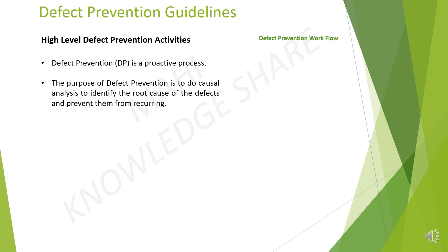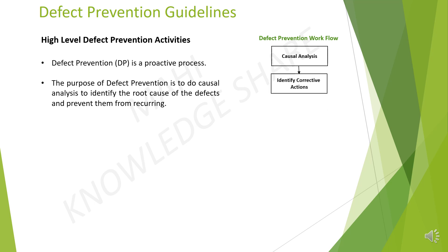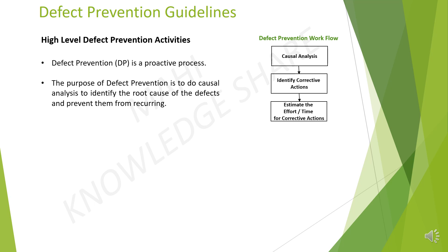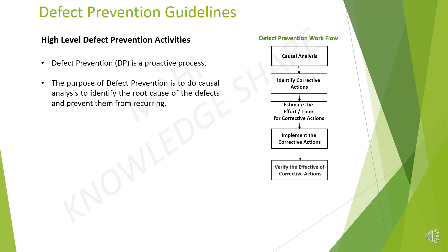Defect prevention workflow. First, it starts with causal analysis. Then, identify the corrective actions. Then, estimate the effort and time required for corrective actions. Then, implement the corrective actions. Then, verify the effectiveness of corrective actions.